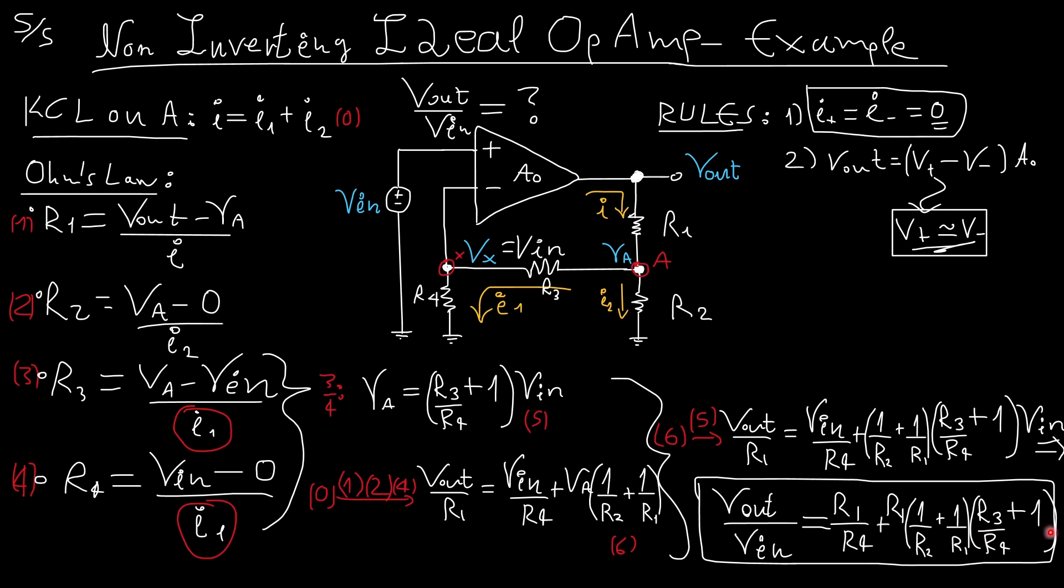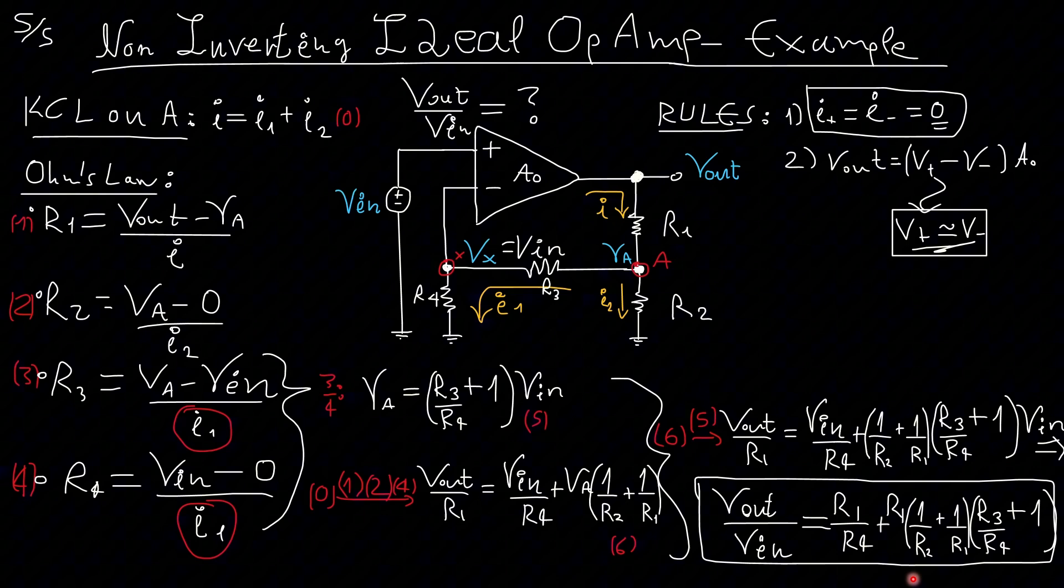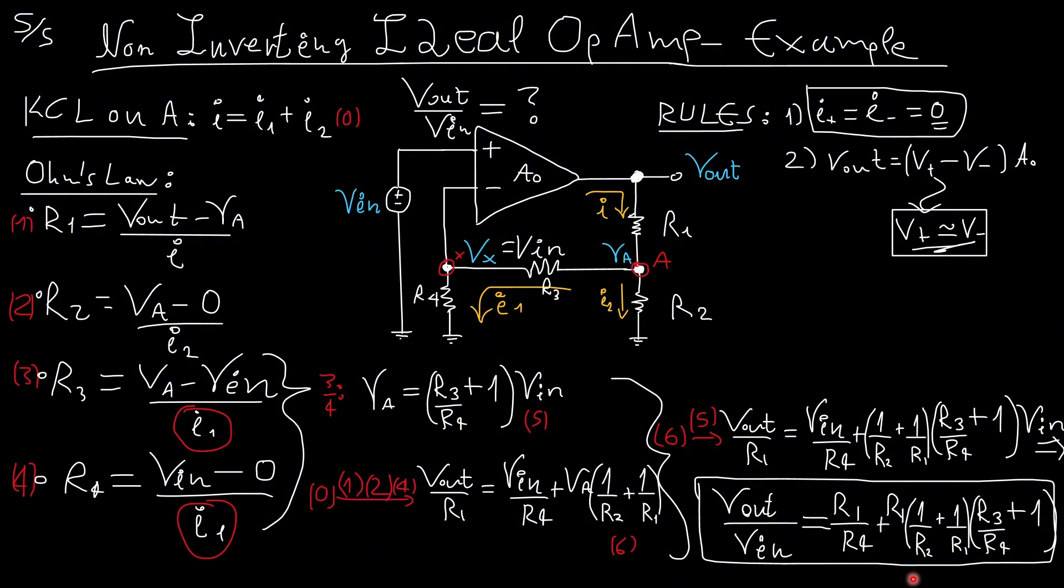Again, by doing simple Ohm's laws and KCLs or KVLs. What if R4 was very large? If R4 is very large, this would mean that this term would be 0 and also this term would be 0. We would be left with this little part here, which would be R1 over R2 plus 1. The exact same of the actual non-inverting op-amp, the basic simple configuration.